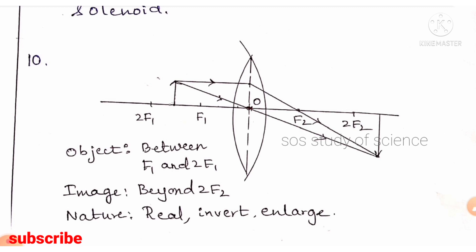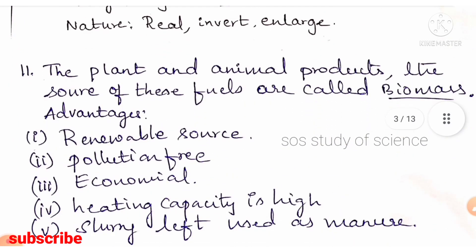For the ray diagram question on a convex lens, the third case was given — the object is placed between f1 and 2f1. In this case, the image is formed beyond 2f2, and the nature of the image is real, inverted, and enlarged.